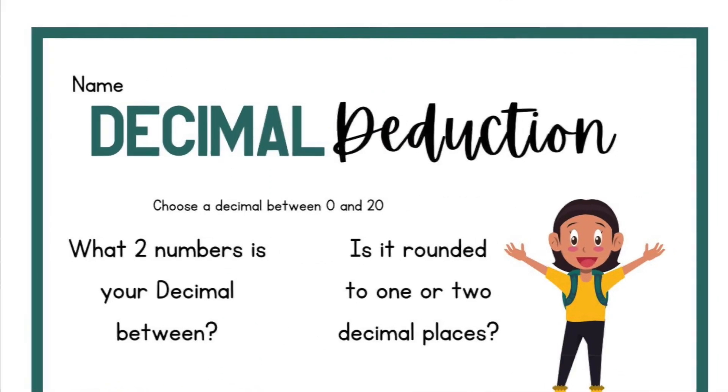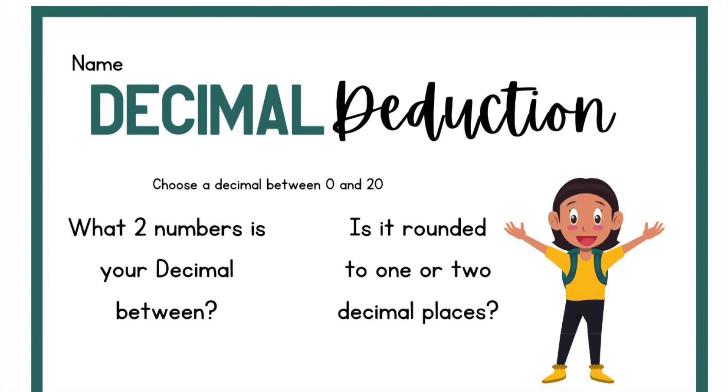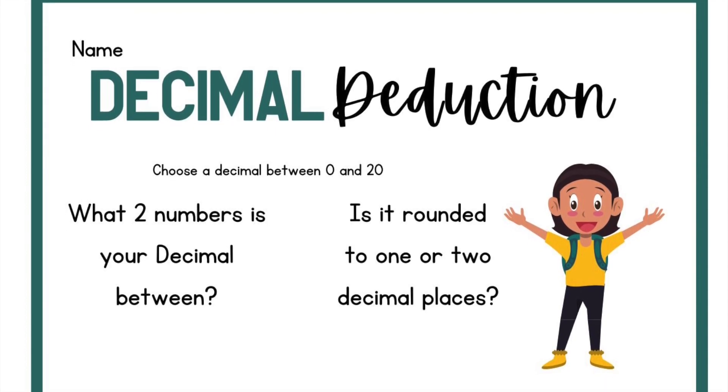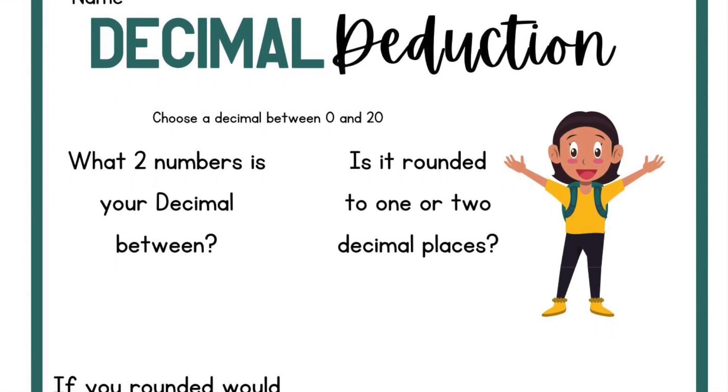The next step is to pair students off, give them the worksheet and a clipboard, and have them choose their own decimals for their partner. The partner then asks a series of questions to guess what decimal is written on their partner's worksheet. This can be further scaffolded by providing guiding questions, as shown on the worksheet here.